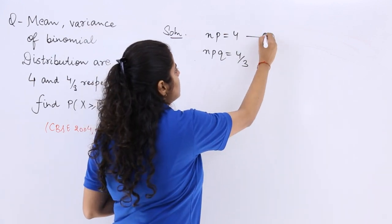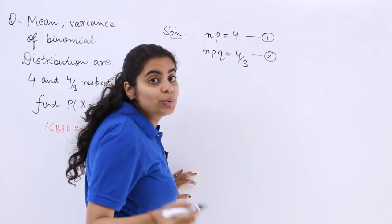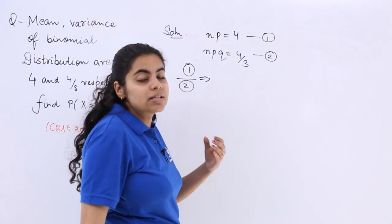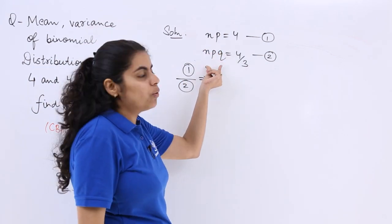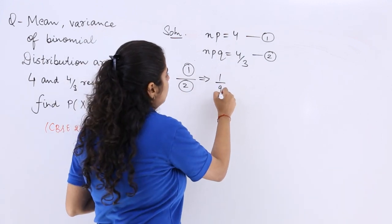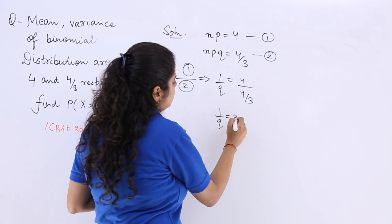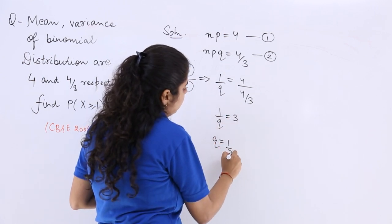Now if you name these as equation number 1 and 2, you can clearly divide equation number 1 and 2 and get certain resultant value. So NP over NPQ will give me 1 upon Q. 4 over 4 by 3. So 1 by Q is equal to 3 or Q is equal to 1 by 3.